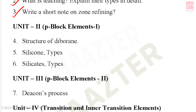Unit 2: P Block Elements 1. Very important 5-mark questions: structure of diborane — very important; silicone types; silicates and silicate types.